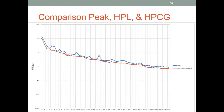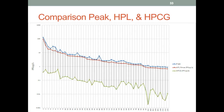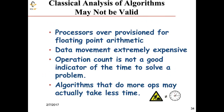These two benchmarks represent bookends on how we can better look at our computers. The peak performance is in blue, LINPACK in red for the dense matrix problem, and the HPCG result for solving the large sparse system is far lower. The classical analysis of algorithms may not be valid — processors today are over-provisioned for floating point, data movement is extremely expensive, and operation count is not a good indicator of the time it takes to solve a problem. Algorithms that do more operations may actually take less time.